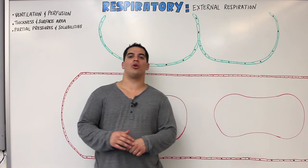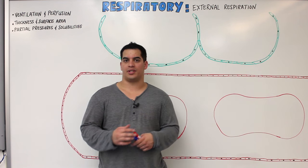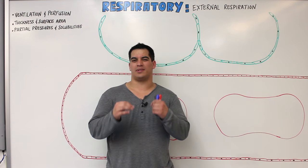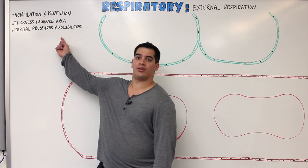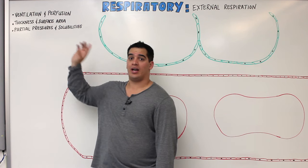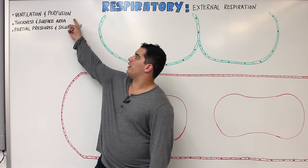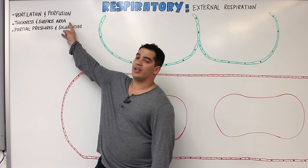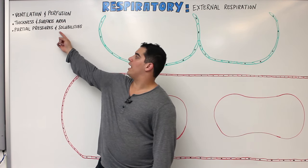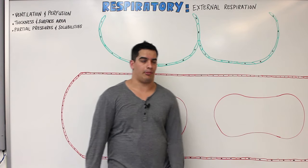In this video we're going to continue covering external respiration, specifically talking about partial pressure gradients and solubilities. If you haven't already, go watch the videos on ventilation and perfusion, and then the one on thickness and surface area of the respiratory membrane. Now we're going to talk about partial pressure gradients and solubilities.